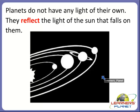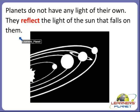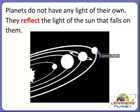So where do we get light? We get light from the sun. Our Earth is also a planet and Earth does not have light of its own. All the planets reflect the light of the sun that falls on them, because they do not have any light of their own.